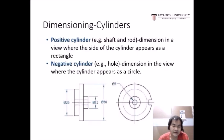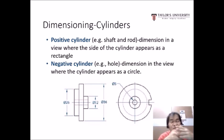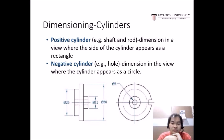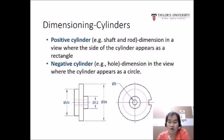For dimensioning a cylinder: for a positive cylinder such as an extrusion or shaft, dimension in the view where the side of the cylinder appears as a rectangle. For a negative cylinder such as an extruded cut or hole, dimension in the view where the cylinder appears as a circle, as shown in the figure.